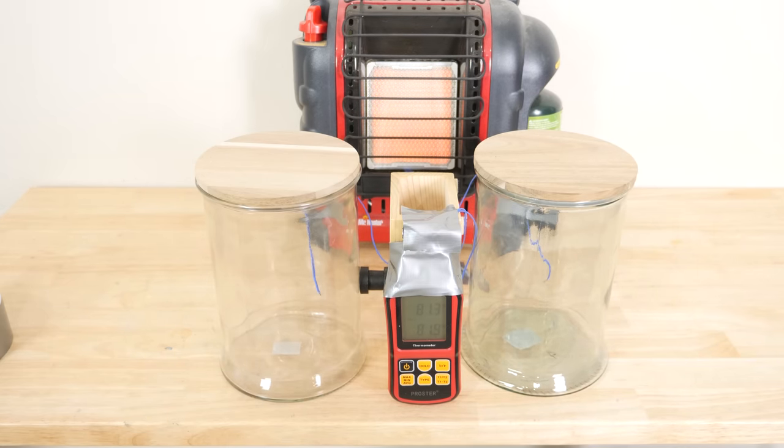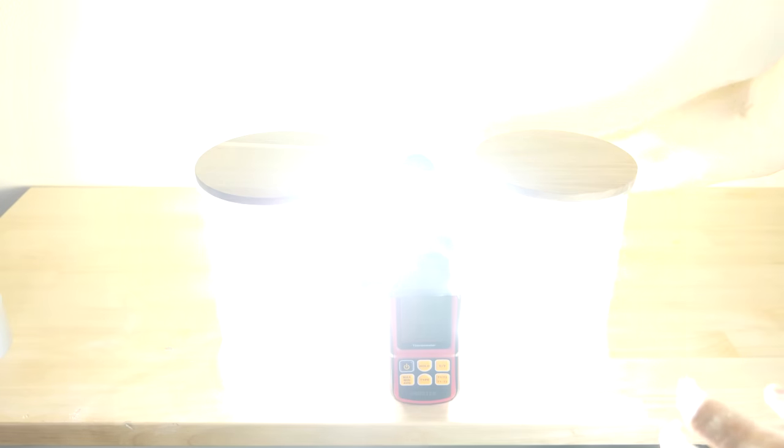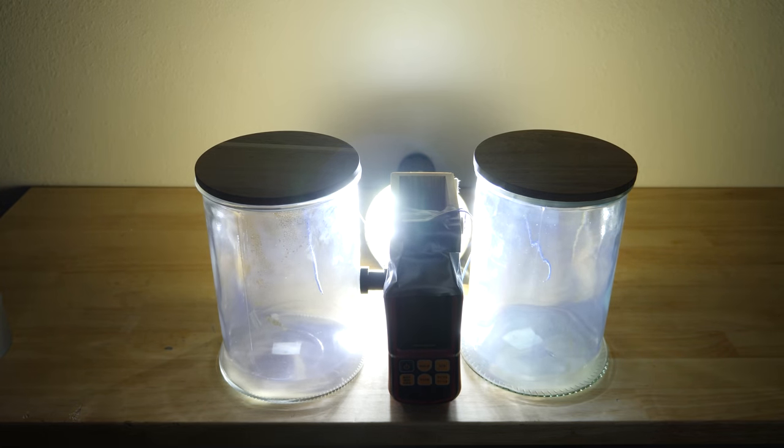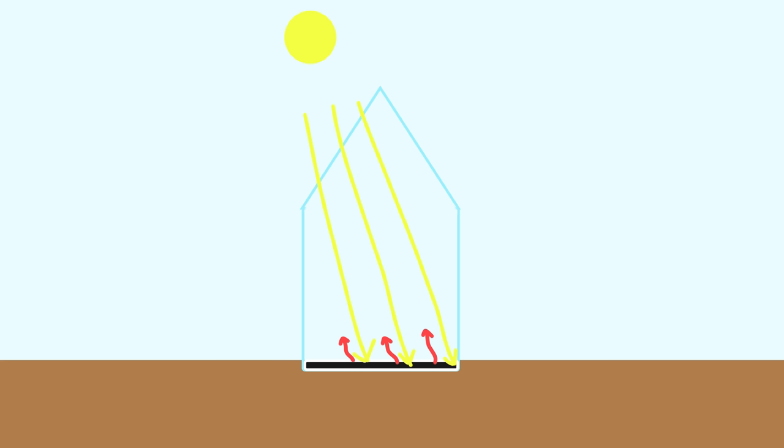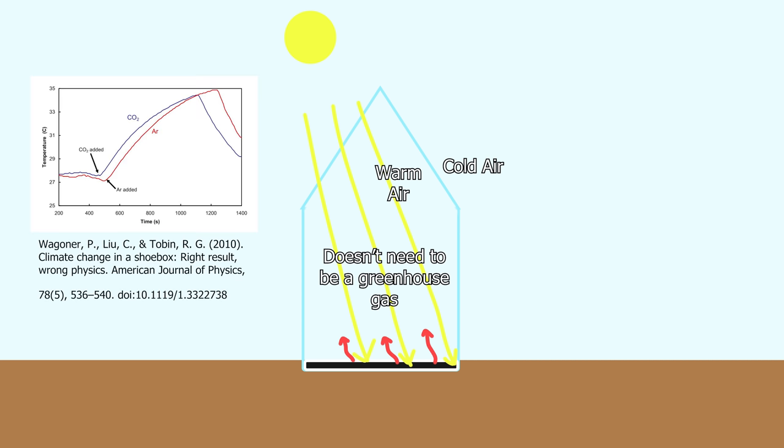But another version of this experiment just shines regular light, not a heat lamp. In this case, you get a pretty significant difference between the CO2 and the air. But the reason that this happens is not because CO2 is absorbing infrared light, but it's because you're creating an actual greenhouse. The reason a greenhouse gets warm is mainly because it doesn't allow the warm air that gets heated from the light to mix with the outside cooler air. So actually, if you used argon, which isn't even a greenhouse gas, you would still get significant heating more than air.